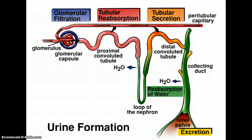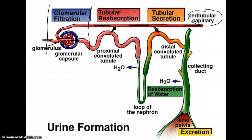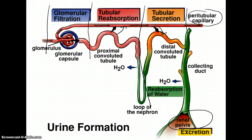This slide displays the same information but with a simpler drawing. The capillary runs along the top and is divided into filtration, tubular reabsorption, and secretion. You can see the arrows going in the direction each word suggests, and then urine goes into the renal pelvis for excretion.